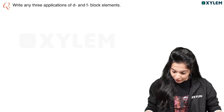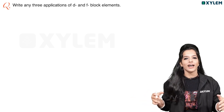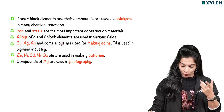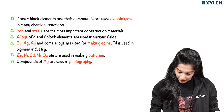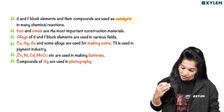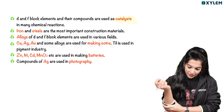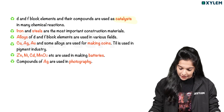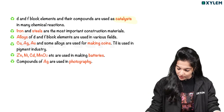Write any 3 applications of D and F block elements. D and F block elements are the most important construction materials. Alloys of D and F block elements are used in various fields. Copper, silver, gold and some alloys are used for making coins. Zinc, nickel, cadmium, MnO2 etc. are used in making batteries. Compounds of silver are used in photography.